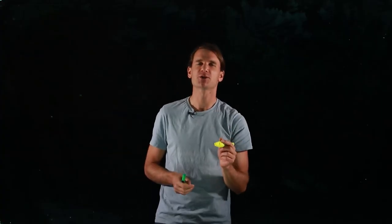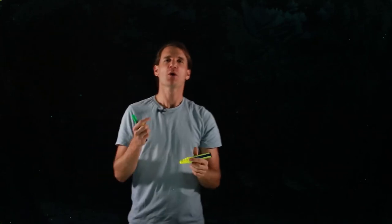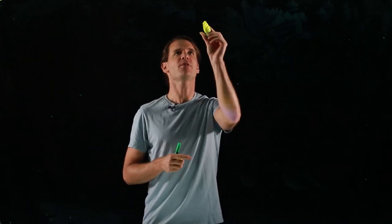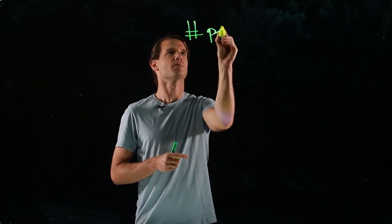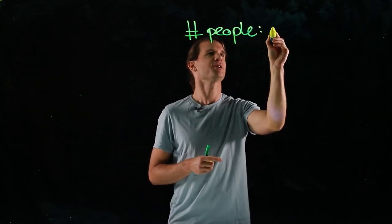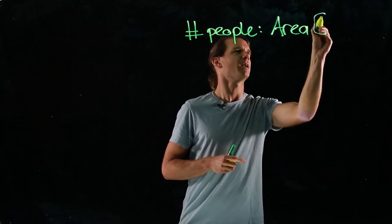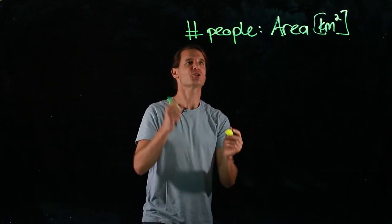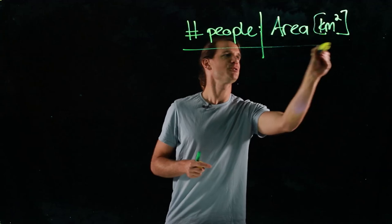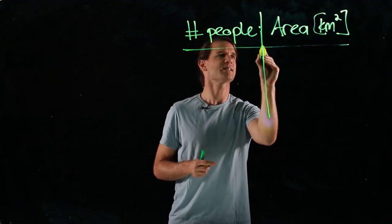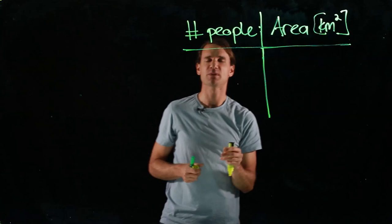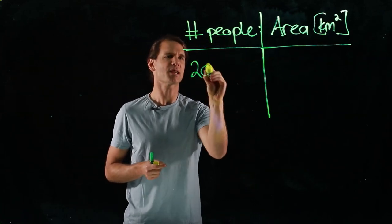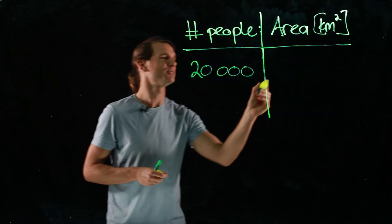The first step of a ratio table is to consider which two physical quantities you are comparing or creating a relationship between. In this question we are creating a relationship between the number of people in Stellenbosch and the area, in square kilometers. From the information given we can insert it directly into a ratio table with those two physical quantities as columns: 20,000 people in an area of 10 square kilometers.